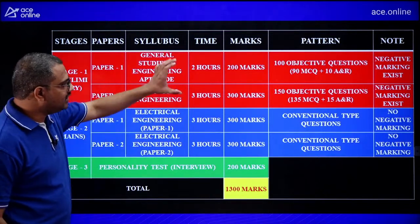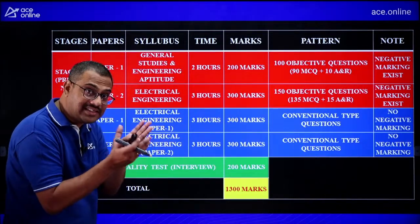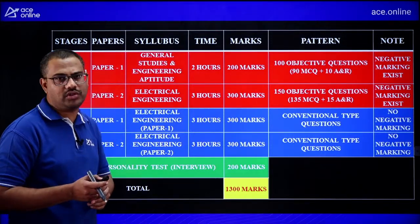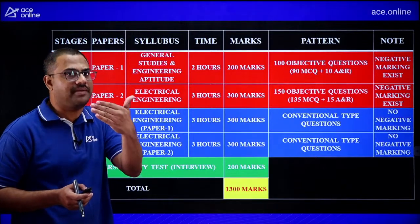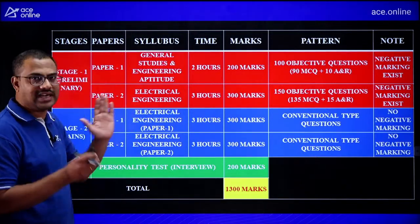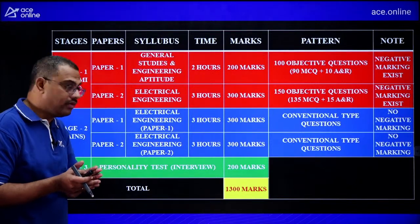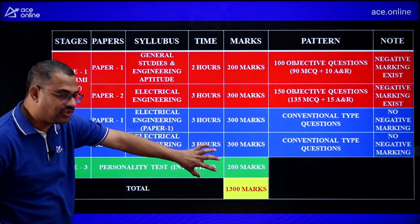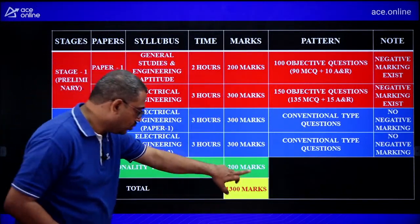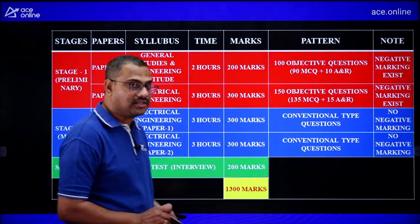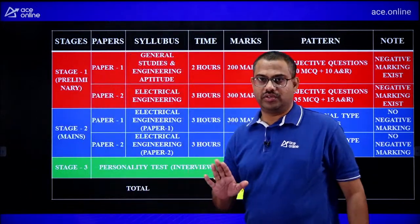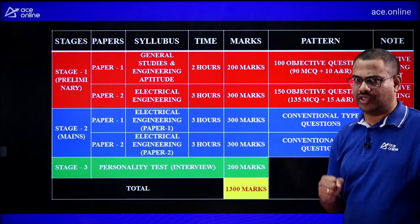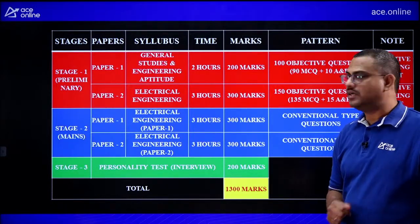So ESE is a three-stage exam: Stage 1 Prelims (objective), Stage 2 Mains (conventional), Stage 3 Interview. GATE is generally one step, though some IITs conduct interviews for specialized M.Tech branches. ESE total marks are 1300. After selection, there is mandatory training lasting one and a half to two years, during which you must be very disciplined and obedient, as your posting depends on it.